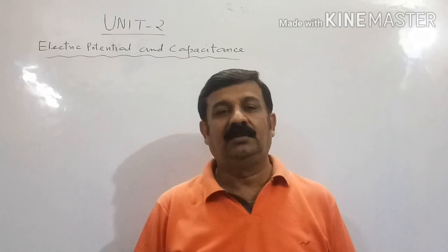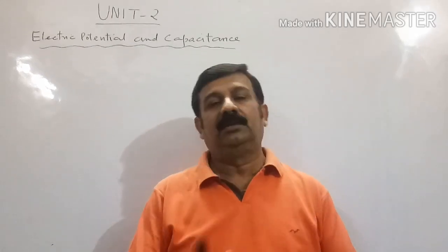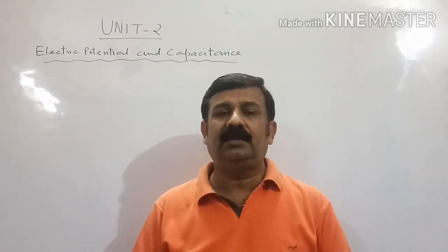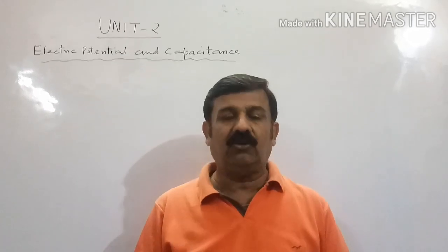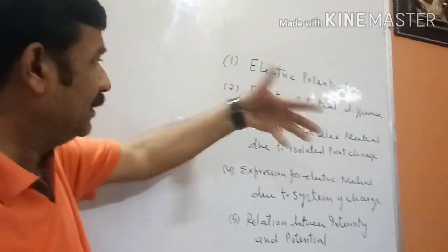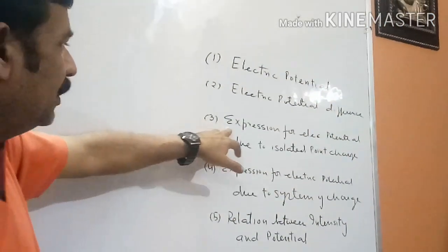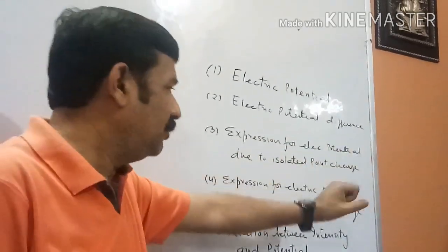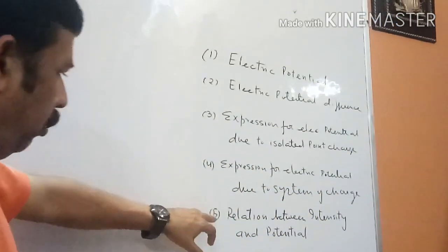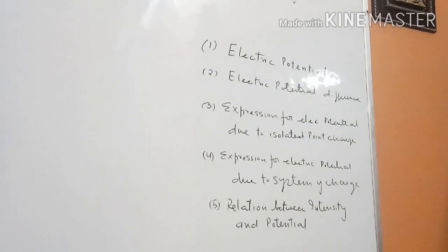Hello dear residents of class 12. Today I am here to share with you the second unit of your syllabus, that is electrical potential and capacitance. The important topics I will share today are: number one, electric potential; number two, electric potential difference; number three, expression for electric potential due to an isolated point charge body; number four, expression for electric potential due to a system of charges; and number five, relation between intensity and potential.